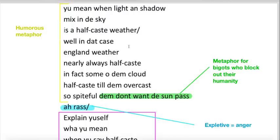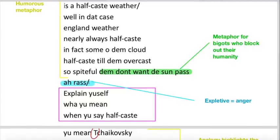We've got humorous metaphor basically saying, do we call it Half-Caste weather when we have a mix of light and shadow in the sky? He's playing on this idea of people being so miserable they might not want the sun to pass. Is he saying that some people he had come across in England were so spiteful? Maybe he didn't have a positive experience. As a bigger picture, I think the cloud not wanting the sun to pass is a metaphor for bigots who block out their humanity. Then he gives one line to our ass, which translates to my ass. It's an expletive, and I think it shows how angry he is and how ridiculous the term Half-Caste is.